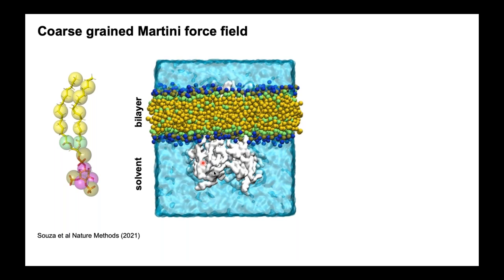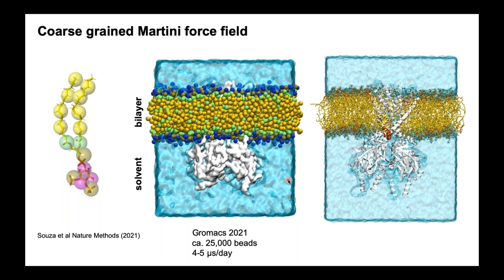We can build our protein of interest into a bilayer comprised of a number of different lipids, and then run a simulation to allow the lipids to interact with the protein. For a system of this size we use GROMACS 2021, and on a standard Linux box we can get maybe five microseconds a day. We can also convert these systems to an atomistic description using a program such as CG2AT, which has been written by someone in the Stansfield lab. There are a lot more atoms and it is slower, but you do get a higher degree of accuracy for looking at the specifics of the interaction.